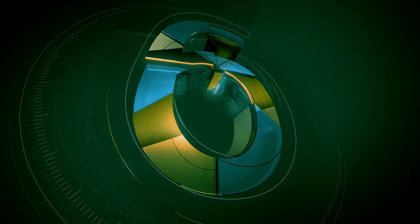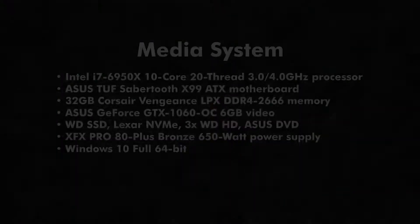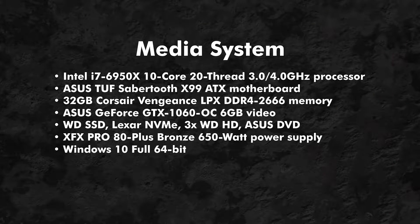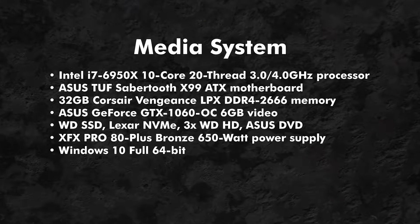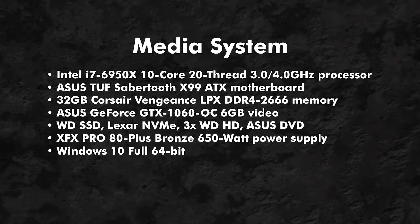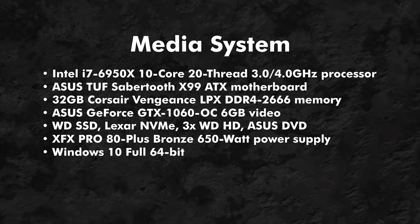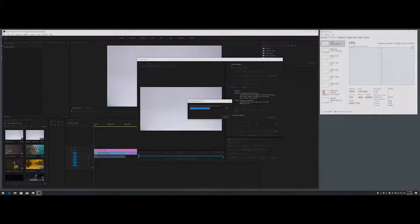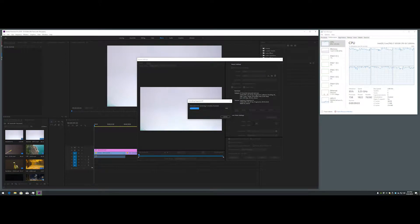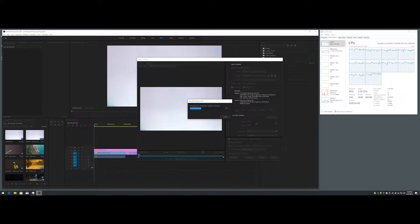How much does core count affect the export time in Adobe Premiere Pro 2019? The test system is my media computer with an i7-6950X 10 core, 20 thread processor. I tested a 4K timeline exported to 1920 HD with 2, 4, 5, 6, 8, 10 cores, and with 10 cores plus hyperthreading.